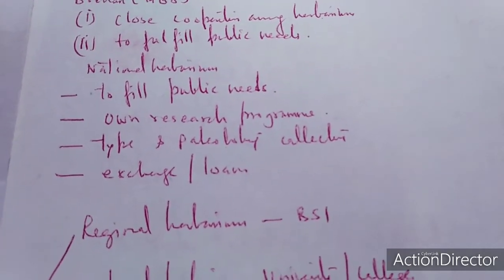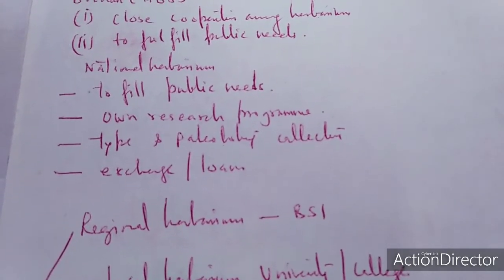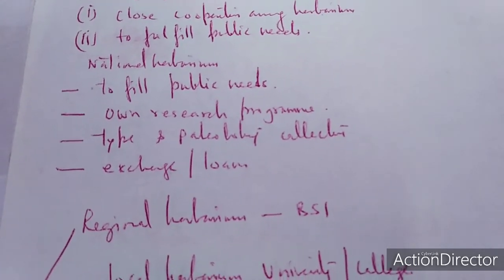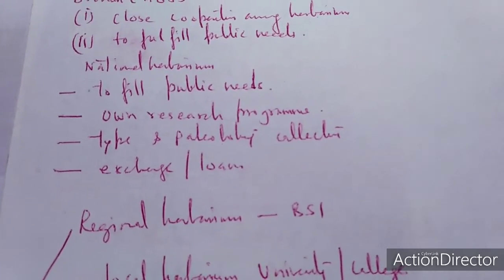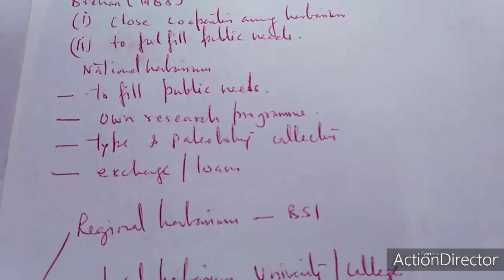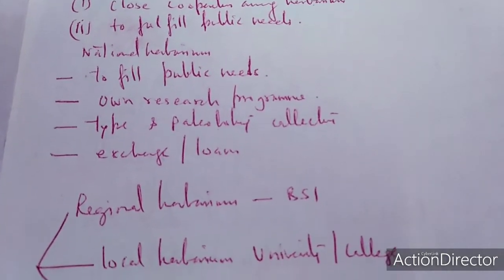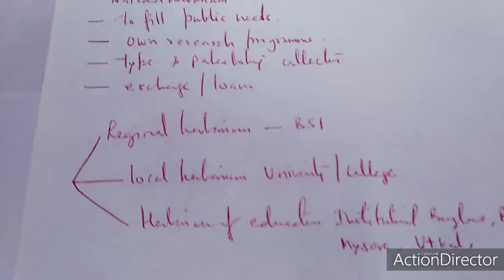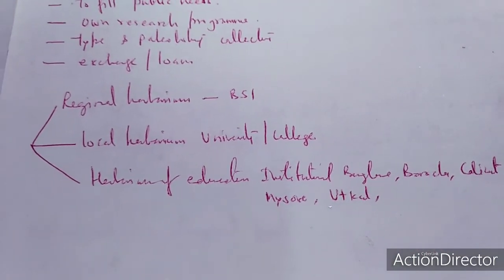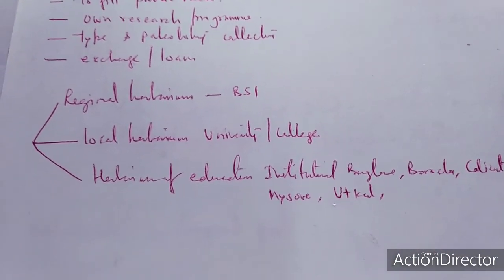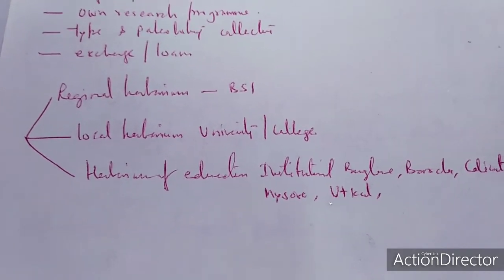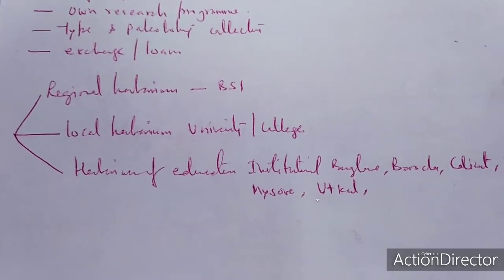There should be an own research program. If more types are there, the more important the herbarium is. Paleobotanical collections can also be deposited into the national herbarium. These are centers of exchange as well as loan. There are three types of herbarium recognized: regional herbarium such as BSI, local herbarium at university and college level, and herbarium of educational institutes.